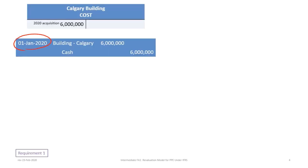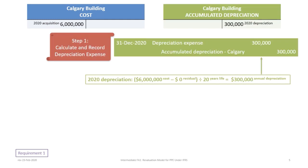The first journal entry relates to the acquisition of the Calgary building on January 1, 2020. The journal entry is simply to debit the building asset for Calgary for $6 million and credit cash $6 million. As with the acquisition of any asset, we calculate and record depreciation expense. The building has a cost of $6 million, zero residual value, and a lifespan of 20 years.